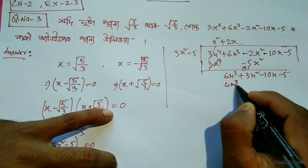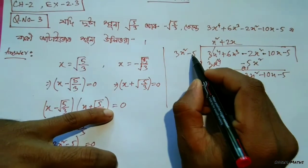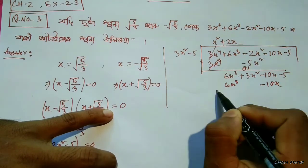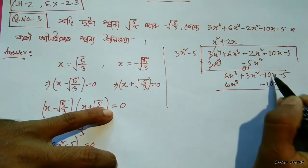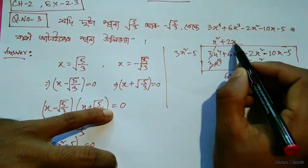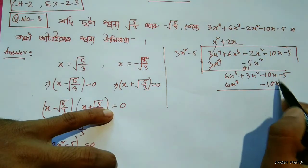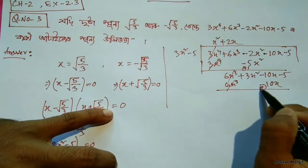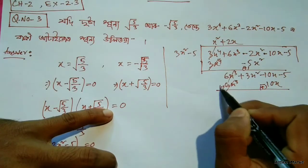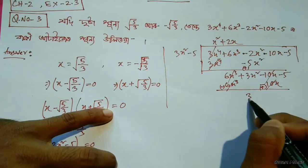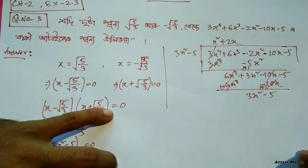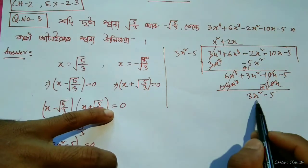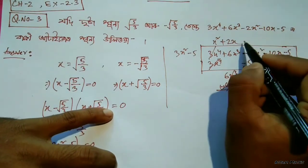2x, 3x square, x square — cube same again. 10x. 2x square, x square. Minus 8x square, minus 5. 3x square minus 5.